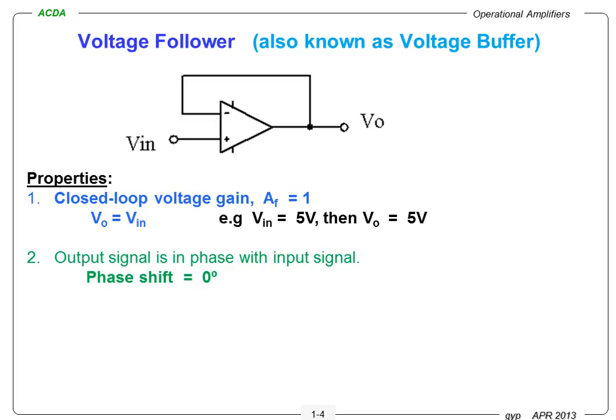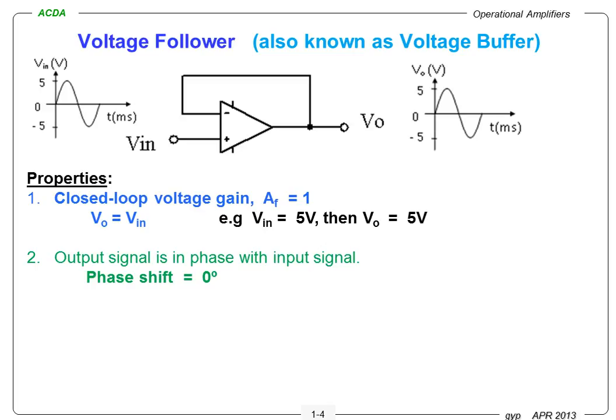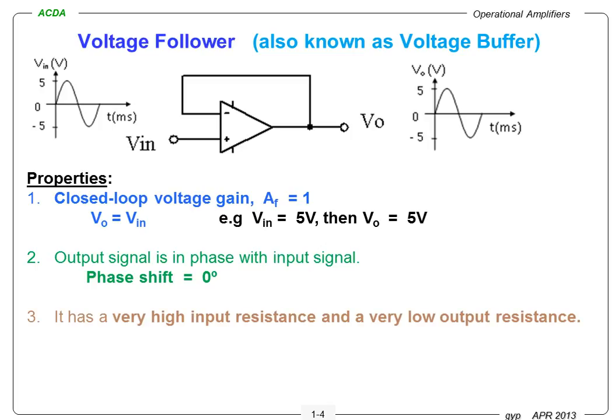The second property is that the output signal is in phase with the input signal — phase shift equals 0 degrees. For example, if I send in a V-in of 5 volts peak AC signal, I will see an output voltage of 5 volts, which is also in phase with the input. The third property is that the input resistance is very high and the output resistance is very low.